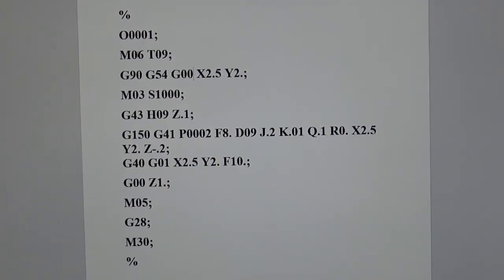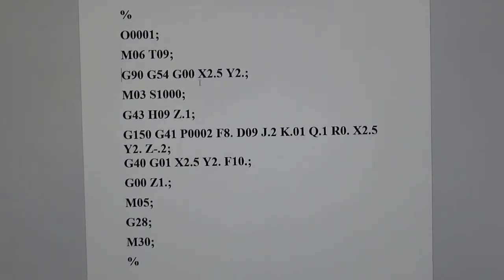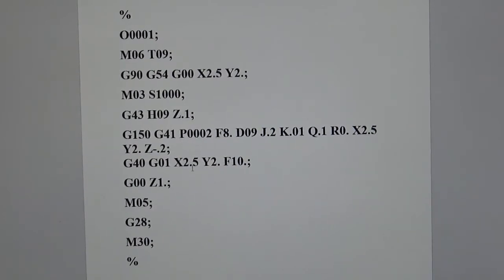Here I got the program name, calling up tool 9. Then I got my G90 absolute G54, which is my work coordinate system. Got my G00 rapid to this X and Y location. Turning on my spindle. Got my G43, which is my tool height compensation, calling up the right tool here with the H value. And then rapid down to Z of 0.1. Then I got my G150.